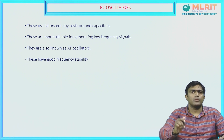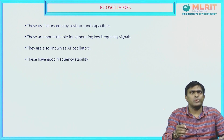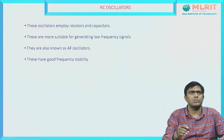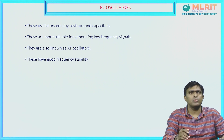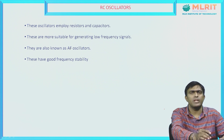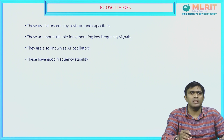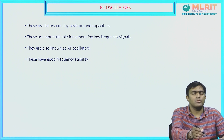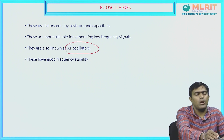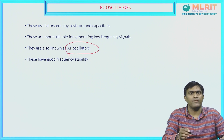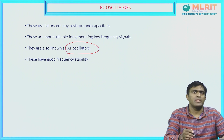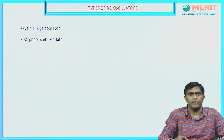What is an RC oscillator? RC oscillators are mainly employed using resistors and capacitors. They are more suitable for generating low frequency signals and they are also known as AF oscillators. RC oscillators have good frequency stability.